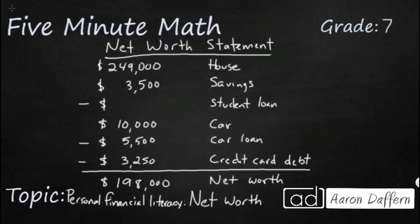Sometimes they give you the net worth statement all together. So our assets are listed here — we can think of them as our positive values: our house, our savings, our car. And then our liabilities are shown as negative. We know that assets minus liabilities equals net worth. So let's see what that's going to give us.